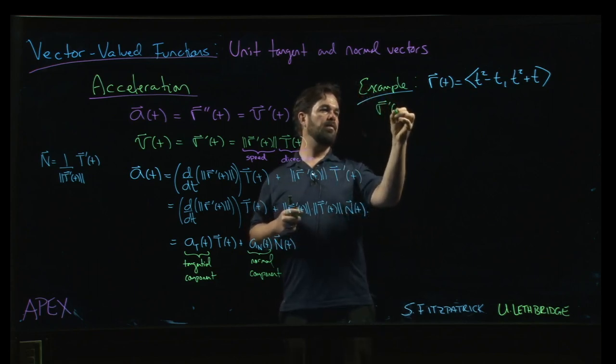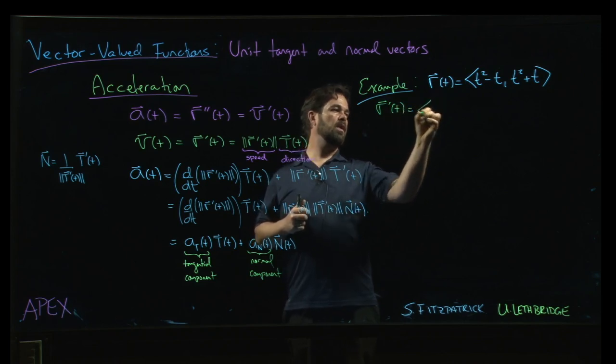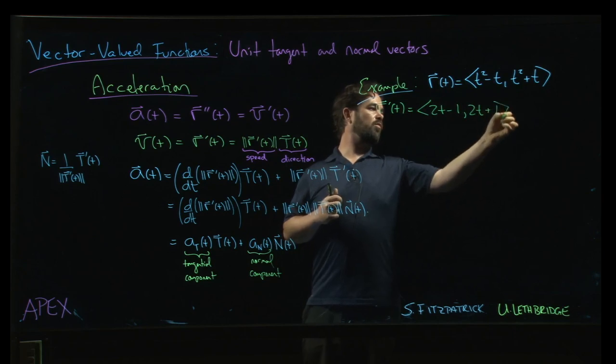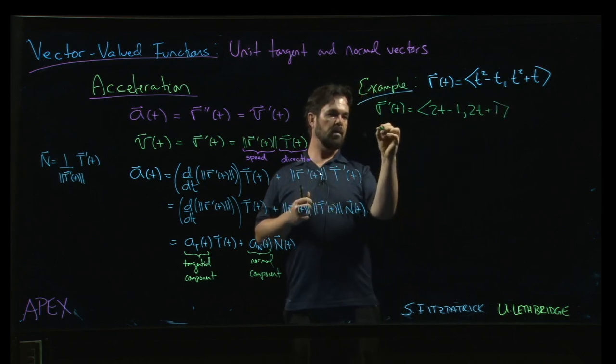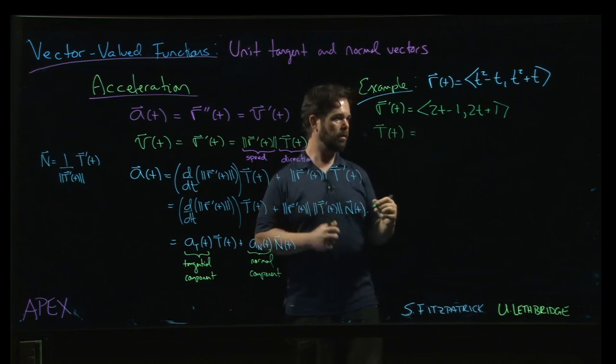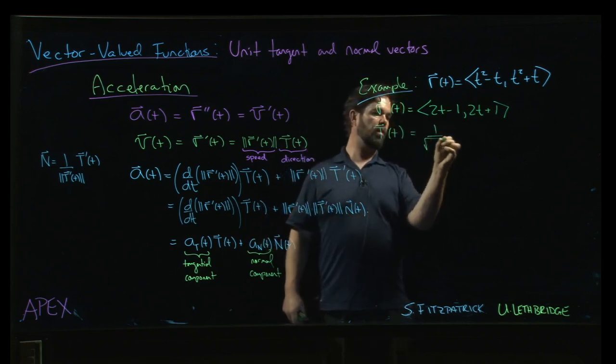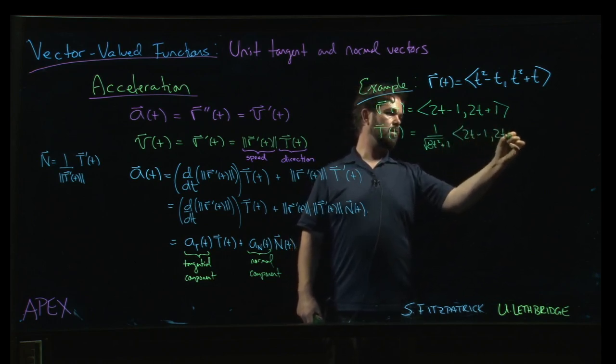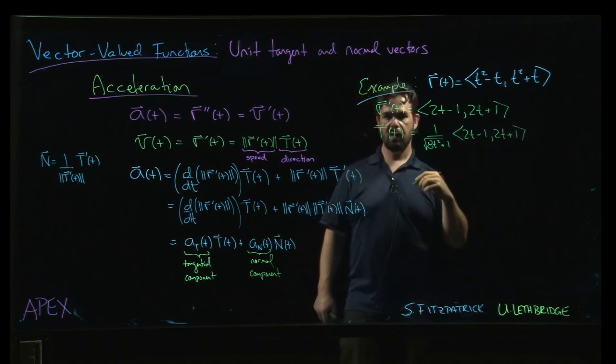R'(t), we have 2t minus 1, 2t plus 1. Okay, so the unit tangent vector, we had 1 over the square root of 8t² plus 1 times (2t-1, 2t+1), in case we need it.